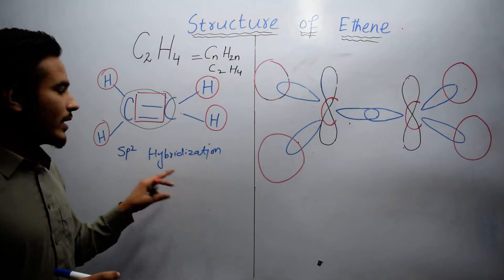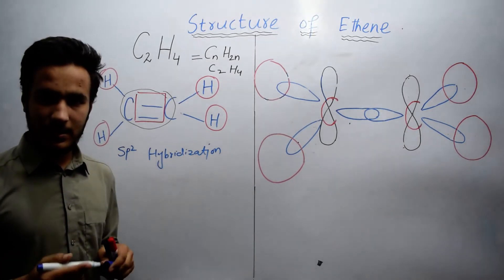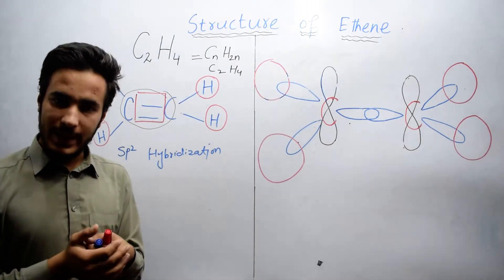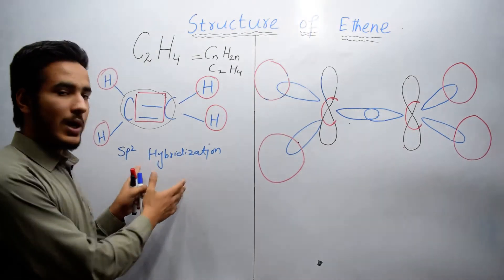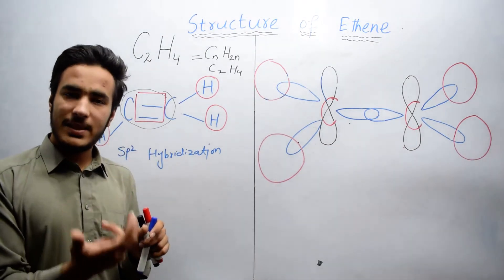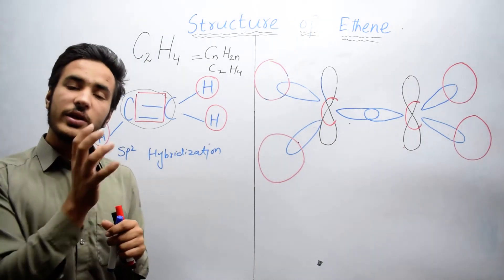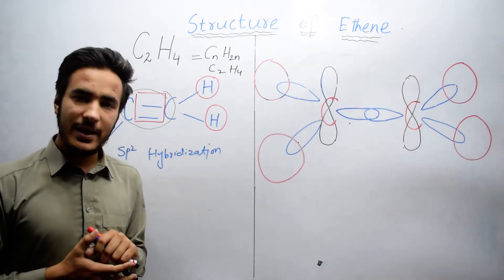First we will look at what is basically hybridization. Hybridization is the mixing of atomic orbitals, and it will give us a new orbital of same shape, same size, and same energy. That orbital is known as hybrid orbital.